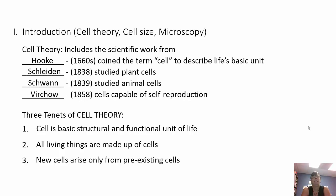Cell theory contains three tenets. First, the cell is the basic structural and functional unit of life — the smallest structure that can perform all functions required for life. Second, all living things are made up of cells. If something is considered living, it's made up of cells. Third, new cells arise only from pre-existing cells — cells don't spontaneously just pop up.